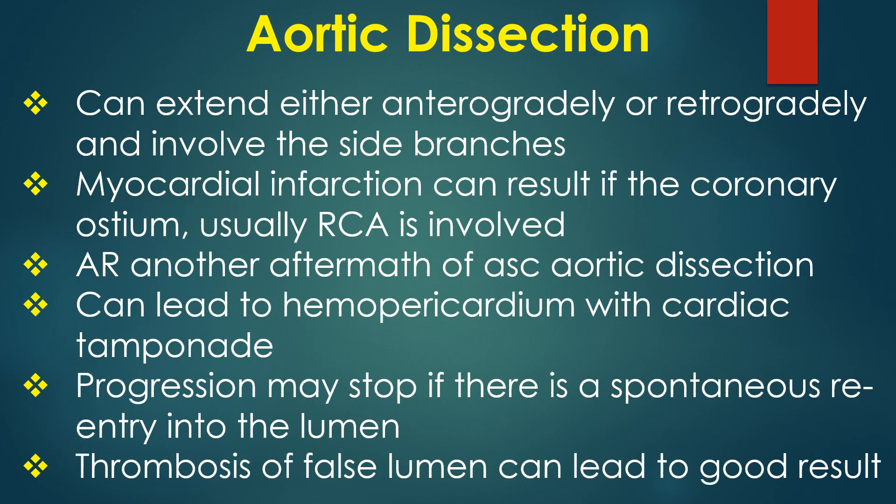Aortic dissection can extend either anterogradely or retrogradely and involve the side branches. Myocardial infarction can result if the coronary ostium — usually the right coronary — is involved. Aortic regurgitation is another aftermath of ascending aortic dissection. Dissection can also lead to hemopericardium with cardiac tamponade. Progression may stop if there is spontaneous re-entry into the lumen, and in the long term, thrombosis of the false lumen can lead to good results.